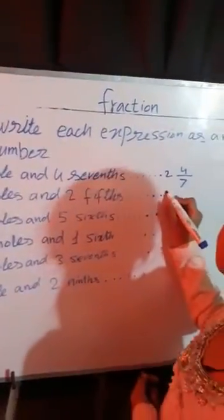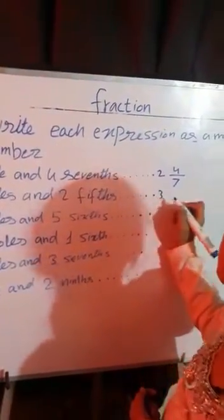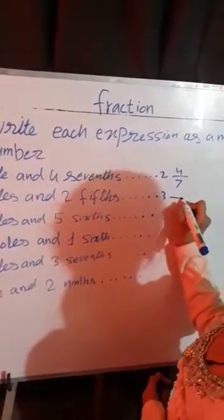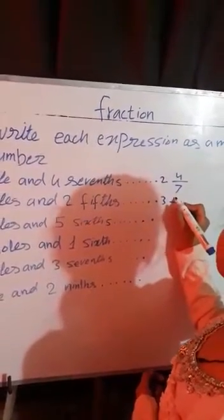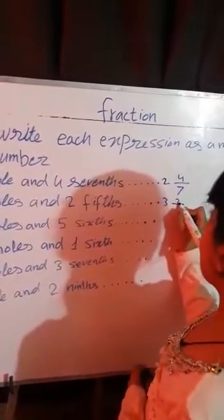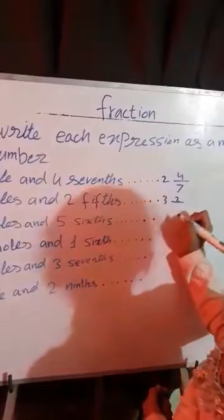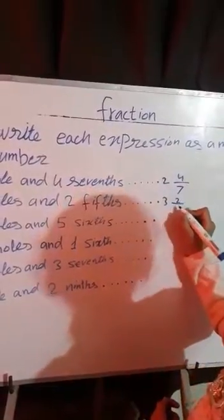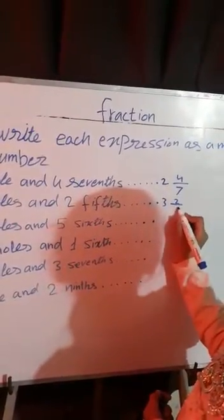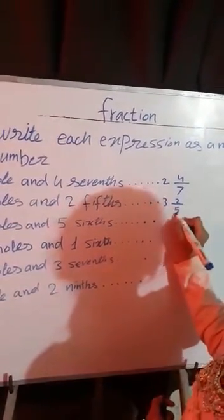Now we are doing Part B: 3 whole and 2/5. So we will write 3 on the side part, 2 on the numerator side, and 5 on the denominator side.